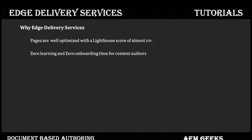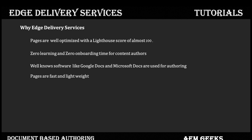For a new content author in AEM, they first need to understand AEM and then how to author content. But with Edge Delivery, we use familiar tools like Google Docs or Microsoft Word — tools people already know — so the only learning needed is how to author your specific content. That is the meaning of zero learning and zero onboarding. Google Docs and Microsoft Word are used for authoring pages, while Google Sheets and Microsoft Excel are used for storing additional data.